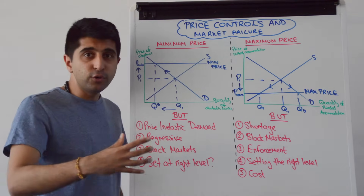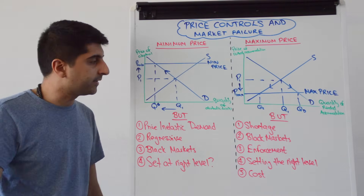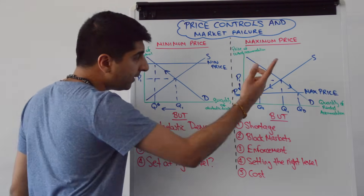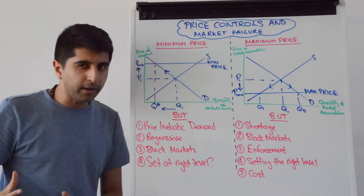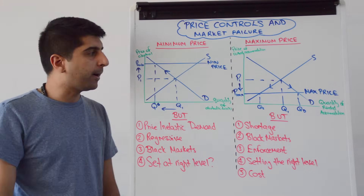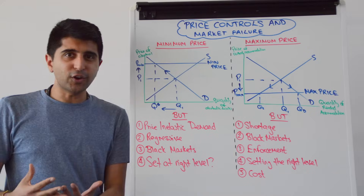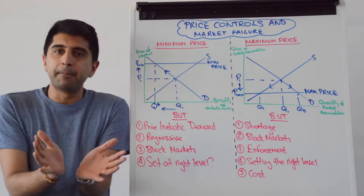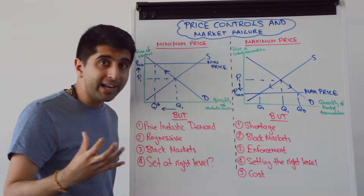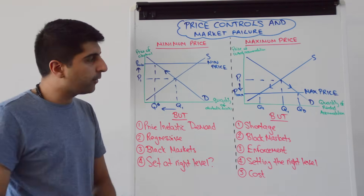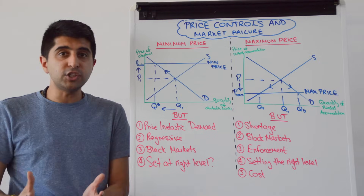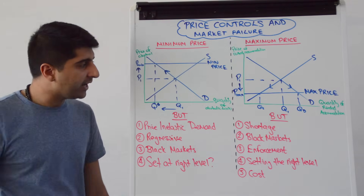We also see maximum prices on basic food items in Venezuela for the same reasons. The biggest problem is that a shortage will be created. You can see on the diagram that yes there is an extension of demand, but there is a contraction of supply — the government creates this excess demand, this shortage and inefficiency in the market. Those who find accommodation at the lower price of P-max are fine, but those willing and able to buy at the lower price who can't find supply — those within the excess demand — don't get accommodation.